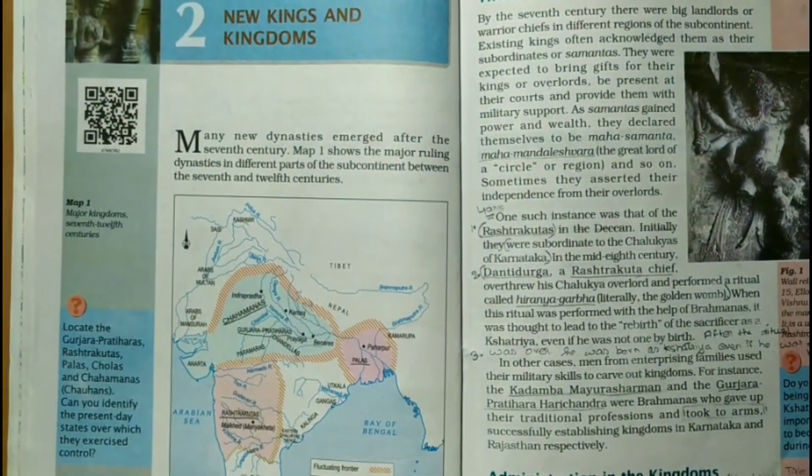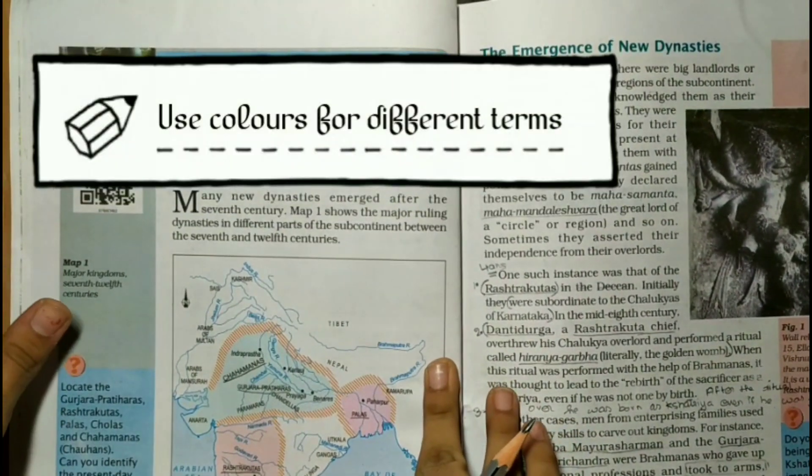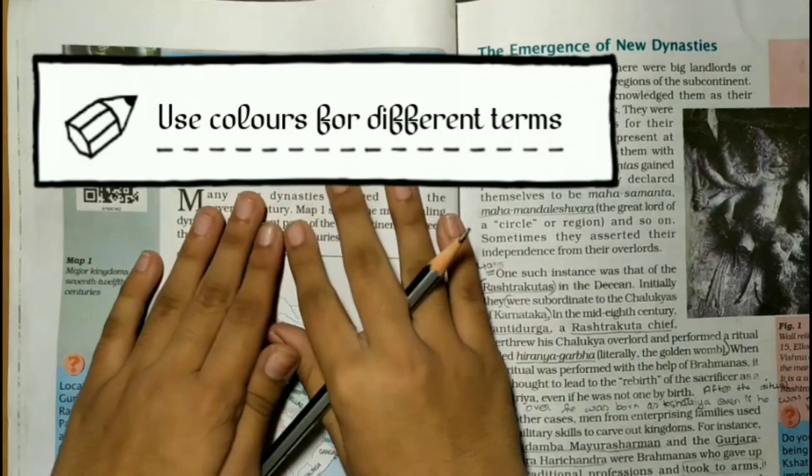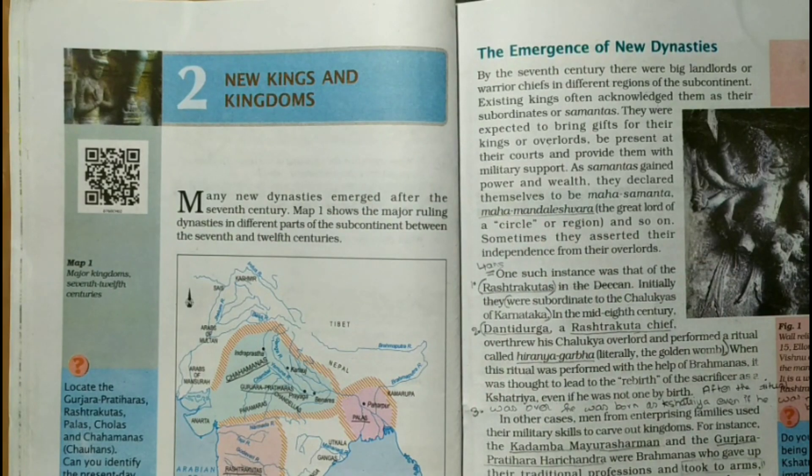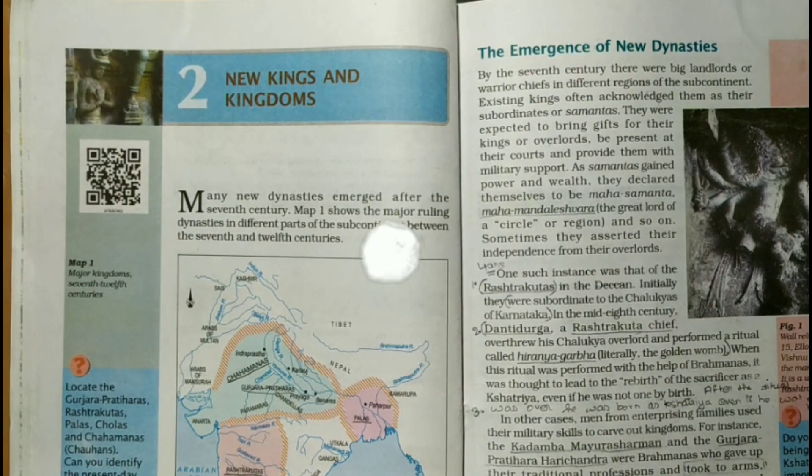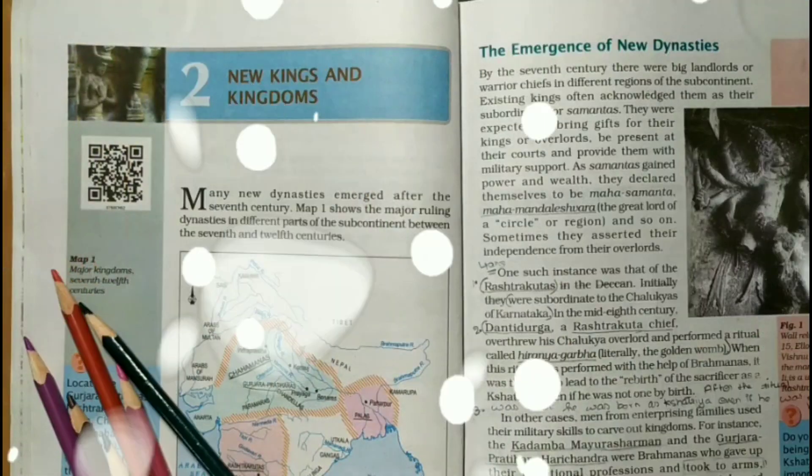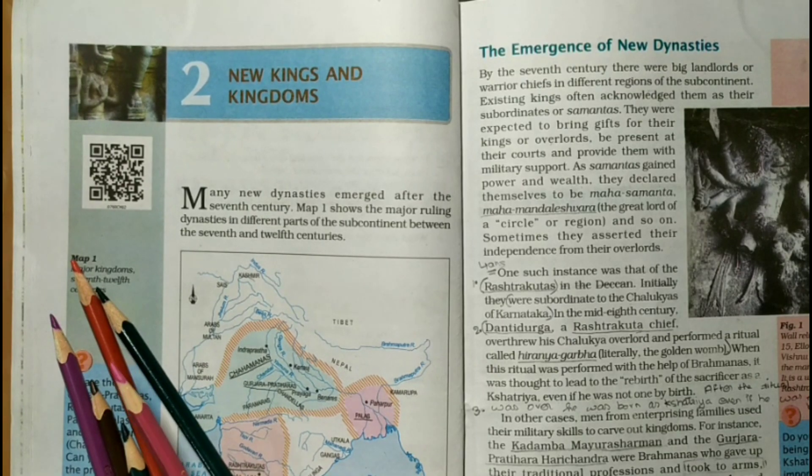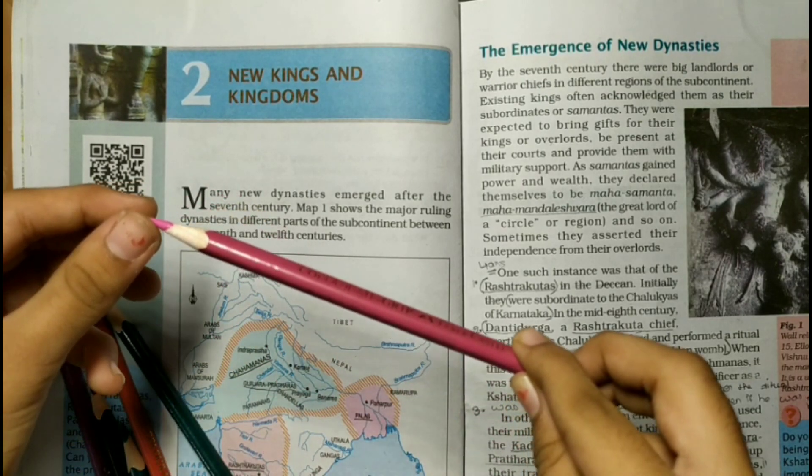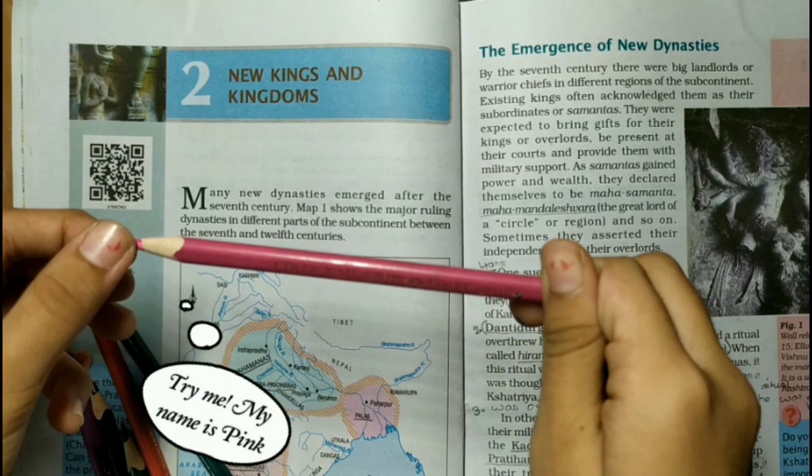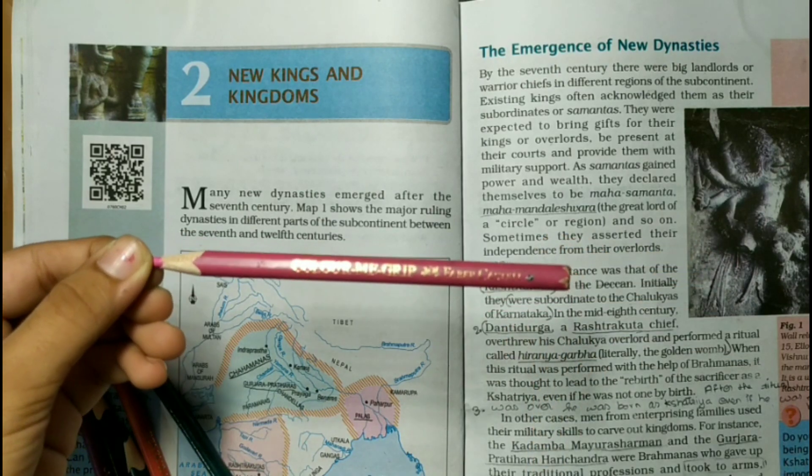Tip number three: use colour pencils for different terms or any other colour. What I mean in this is that subjects like history have a lot many different divisions in that, like the name of the year, the name of the person, or the name of the date.